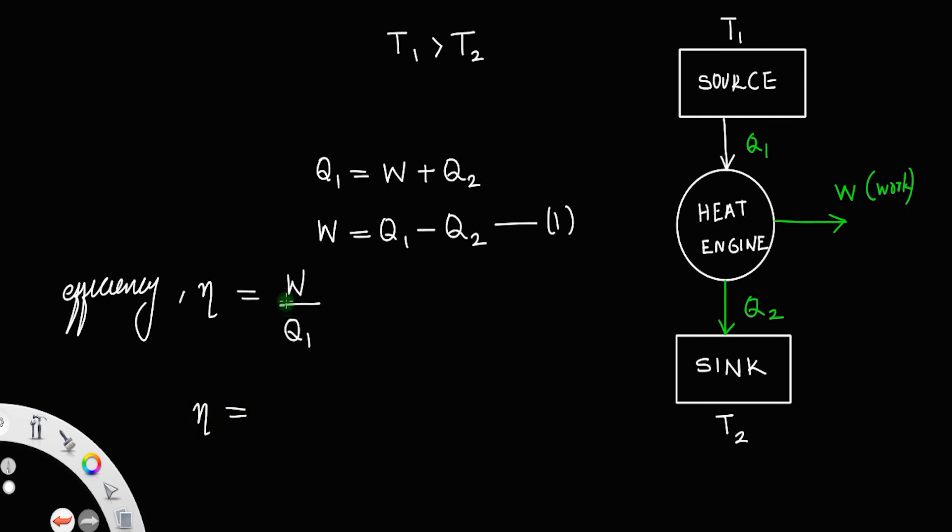Efficiency will be work, we already know it is Q1 minus Q2 divided by Q1. This can also be written as Q1 by Q1 minus Q2 by Q1. So, the formula for efficiency is 1 minus Q2 divided by Q1. This is the efficiency of a heat engine.